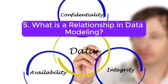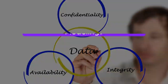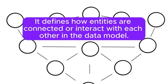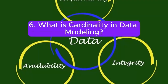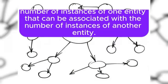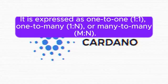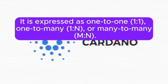5. What is a relationship in data modeling? Answer: A relationship represents an association between two or more entities. It defines how entities are connected or interact with each other in the data model. 6. What is cardinality in data modeling? Answer: Cardinality defines the number of instances of one entity that can be associated with the number of instances of another entity. It is expressed as one-to-one (1,1), one-to-many (1,n), or many-to-many (m,n).